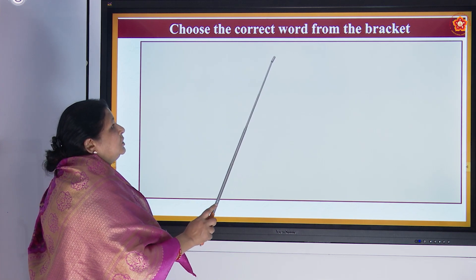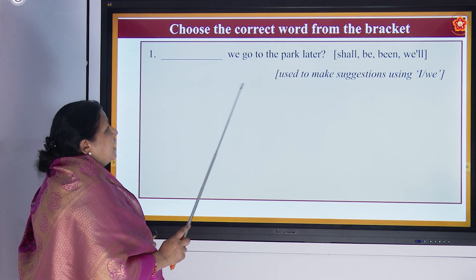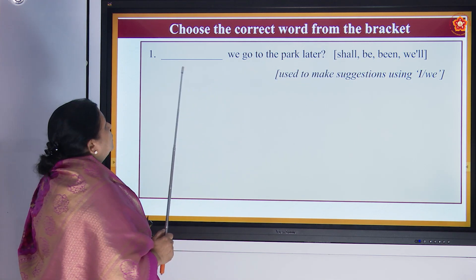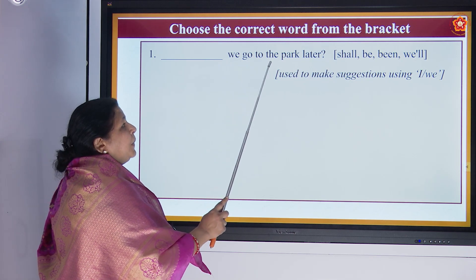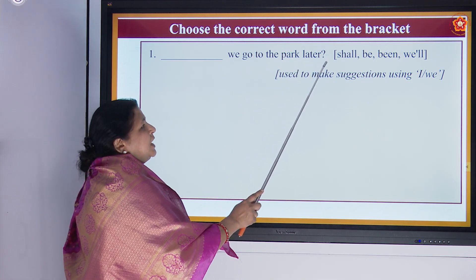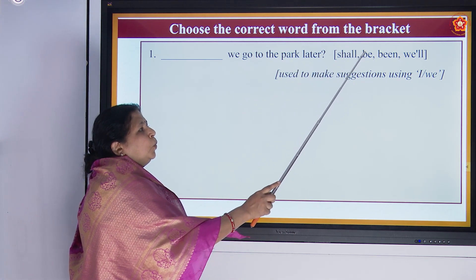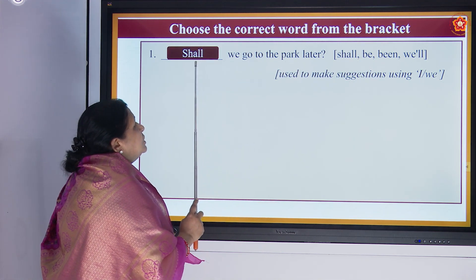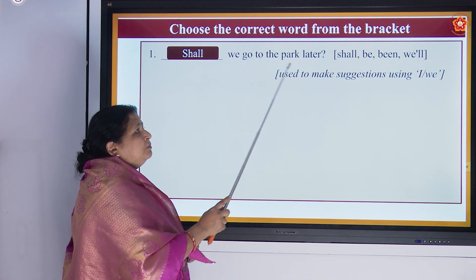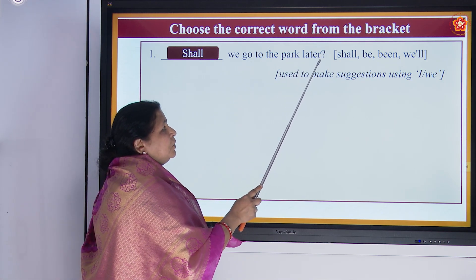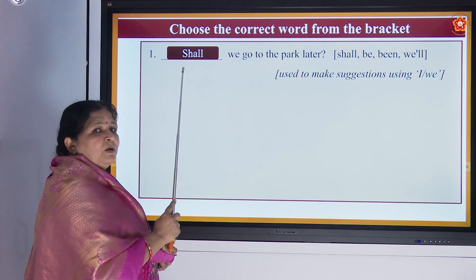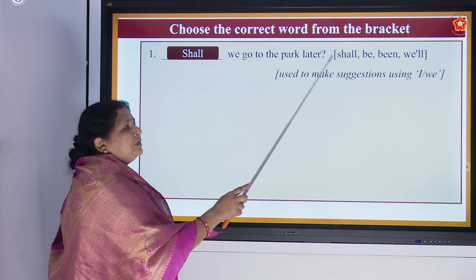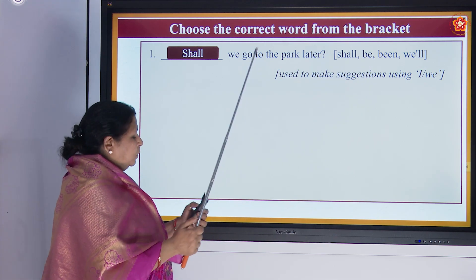Choose the correct word from the bracket. We have given reasons also for when to use 'shall'. The first example: 'Dash, we go to the park later' — shall, be, or will? When we use 'shall' here: 'Shall we go to the park later?' Because it is a question form, 'shall' comes at the beginning. This is used to make suggestions using 'I' and 'we'.